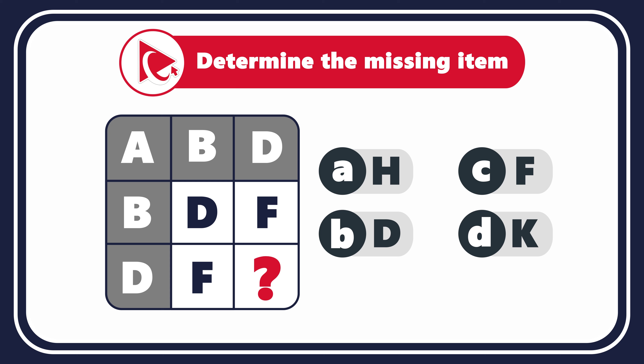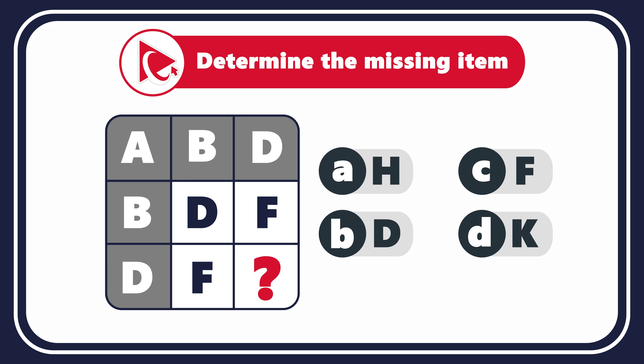Choice A: H. Choice B: D. Choice C: F. And last but not least, Choice D: K. Take a close look to see if you can come up with the answer. I mentioned that this question is a little tricky, so let me give you a hint: take a close look and consider why some squares in the matrix would be in gray and some would be in white.